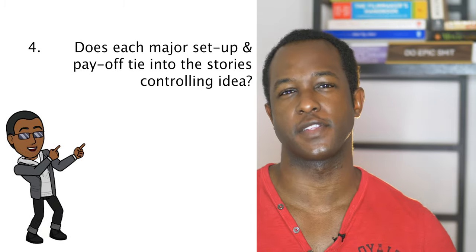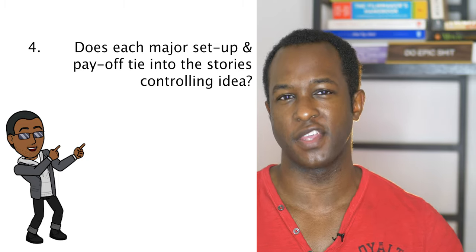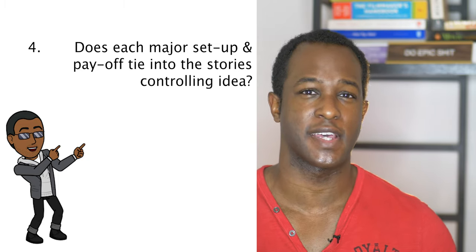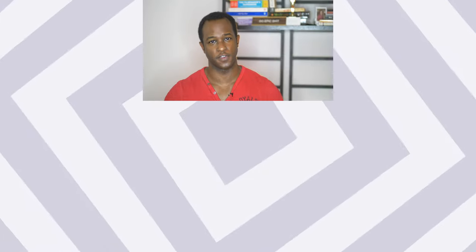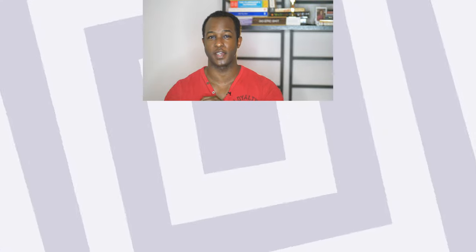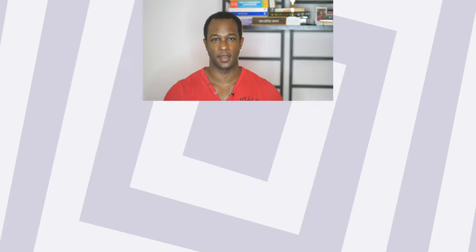Number four: you've got to ask yourself, does each and every major setup and payoff directly tie in to your story's controlling idea? If you don't know what a controlling idea is, I've made a video on it — I'll put it in the comments below. If you're interested in screenwriting, please check out one of the books I have linked below — a couple I used in film school and others I picked up along the way, but they're really instrumental to screenwriting and filmmaking. And if you're interested in checking out my film, The Brotherhood, on Amazon Prime, it is on there for free.